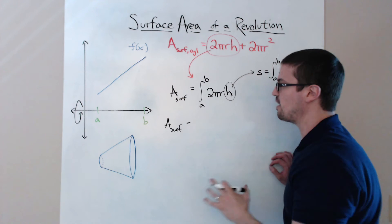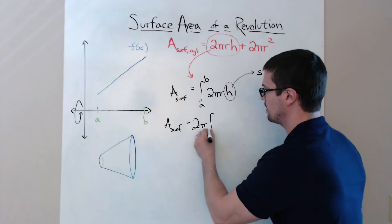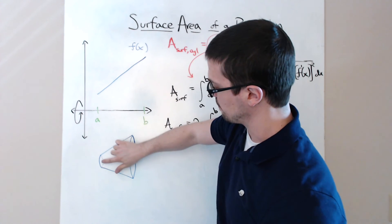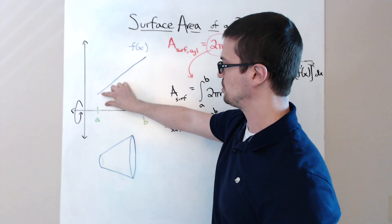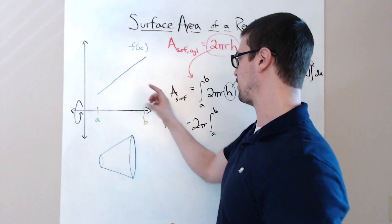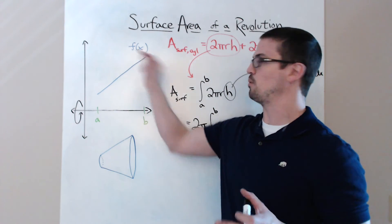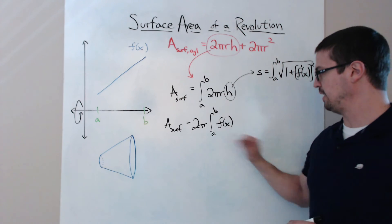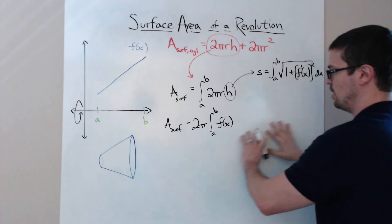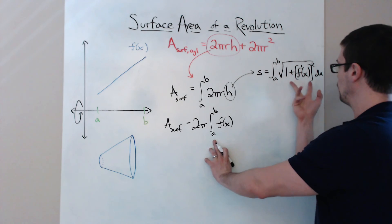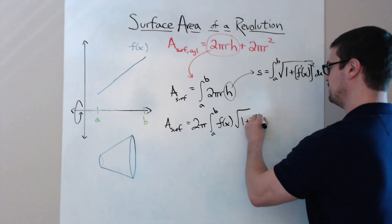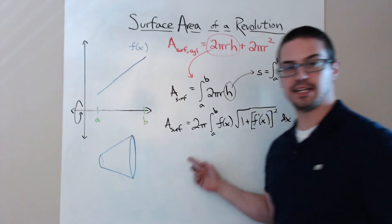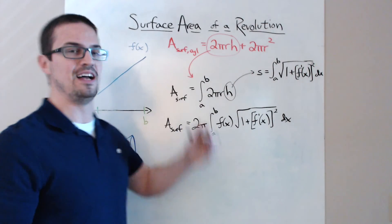Since 2π is a constant, we can pull it in front of the integral to make it easier to look at. The radius, if you remember from the disk method, is basically just the distance from the center of the circle up to the top of the function. The radius changes as you move along that function — it's getting bigger and bigger — so r isn't a fixed value; it changes based on y, which is f of x. So we write f of x instead of r, giving us the integral from a to b of f of x times the square root of 1 plus the derivative of f of x squared dx. This whole thing represents the equation for the surface area of any solid of revolution.